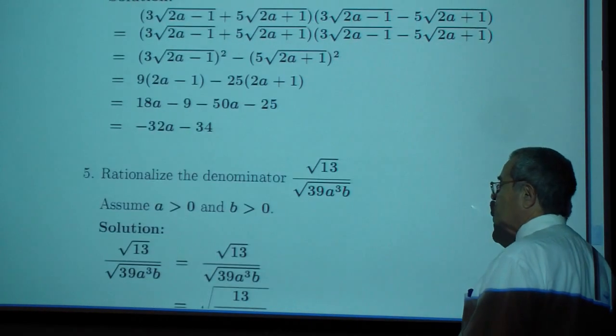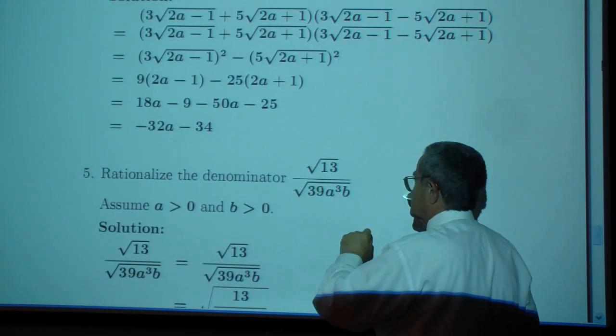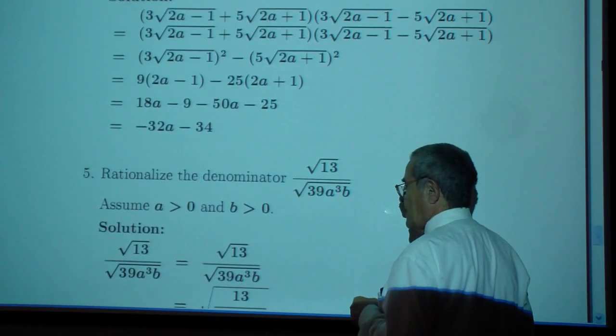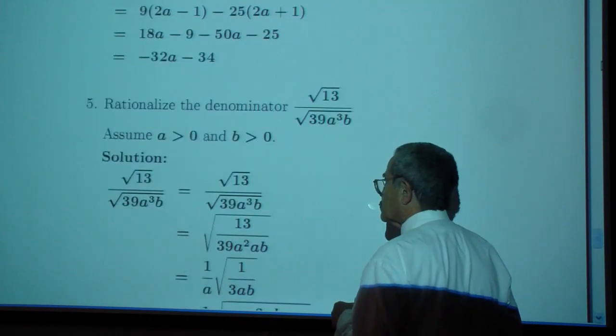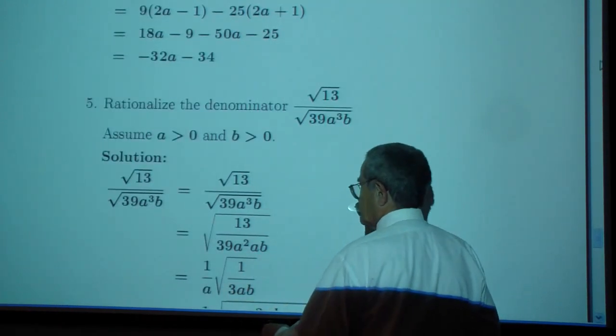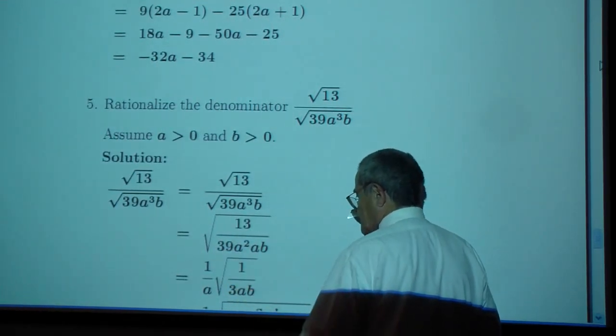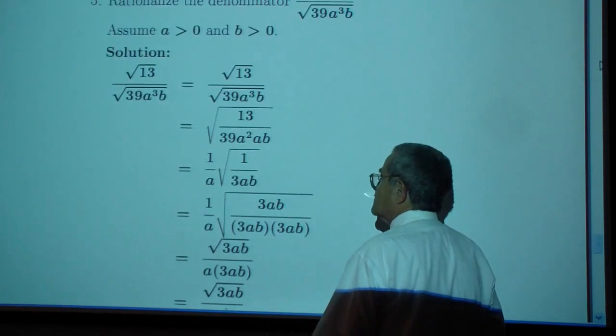Rationalize the denominator. Multiply, take out the a squared. Okay, write it as one radical. Thirteen goes into thirty nine three times. Multiply numerator and denominator by square root of three a b.